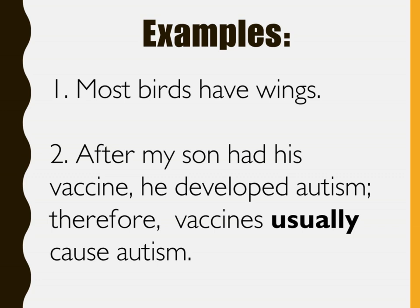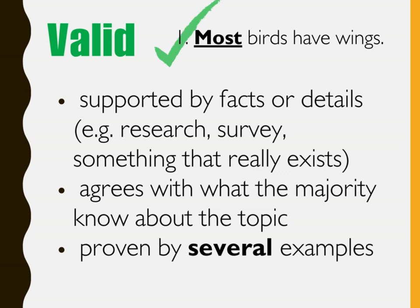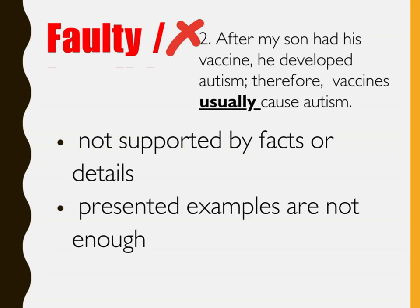Let's take a look at these two generalizations — which one is valid and which one is not? The first generalization is valid because it is supported by facts or details, examples from research, survey, or something that really exists. It agrees with what the majority know about the topic or is proven by several examples. The second generalization is invalid or faulty because it is not supported by facts or details, and the presented examples are not enough.